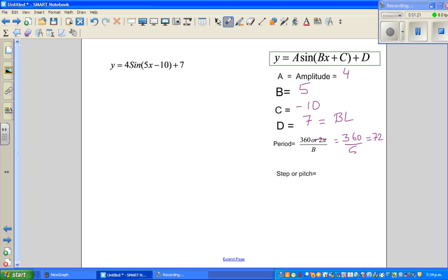Now pitch or step, whenever you draw a sine graph, you need 4 steps. The pitch or the step or the scale, whatever you call it, is the period divided by 4, which is 36 divided by 2, which is 18. So we will go at a step of 18.